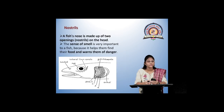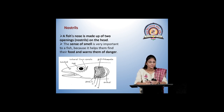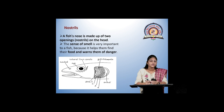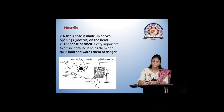The next organ is nostrils. Nostrils are the two openings on the nose present on the head. They are used for the sense of smell, because in fishes they also function in searching for food and warning them from danger.